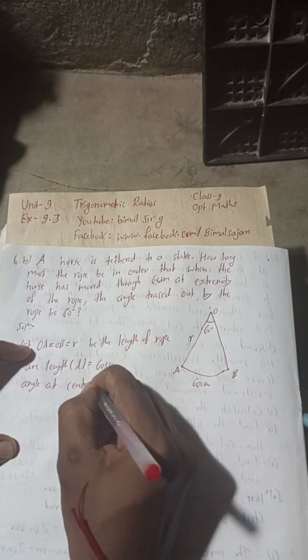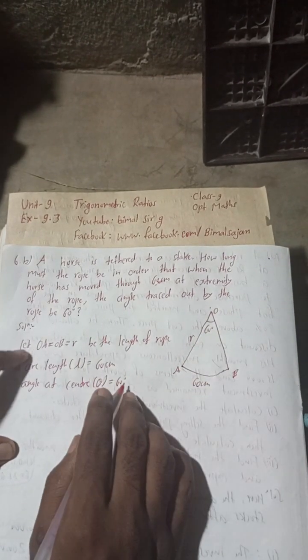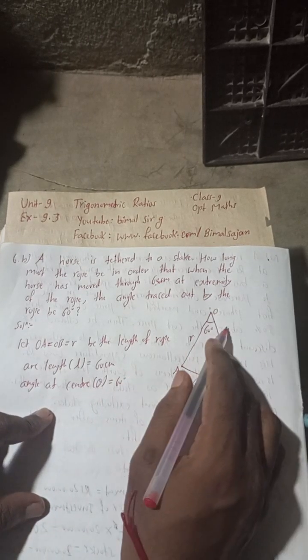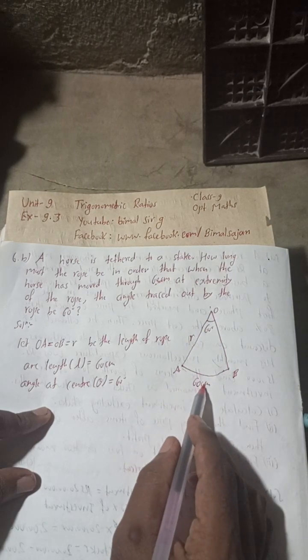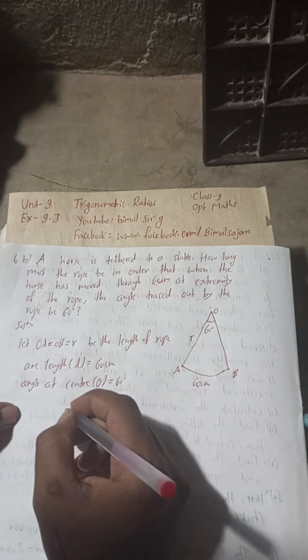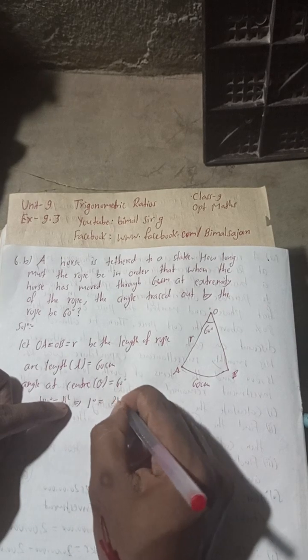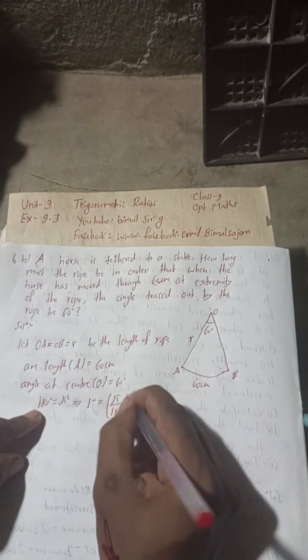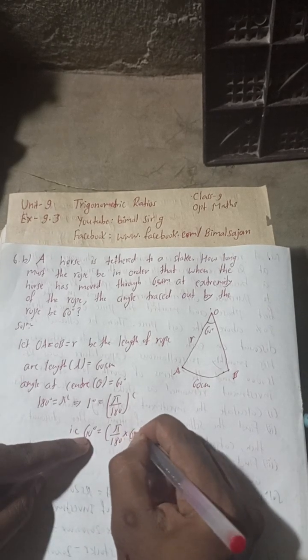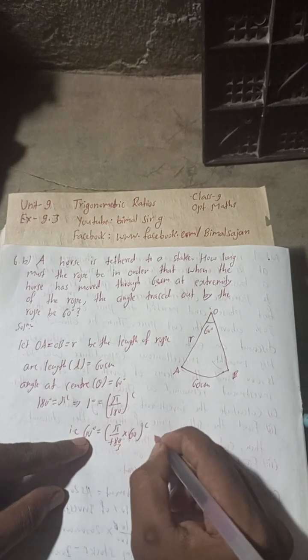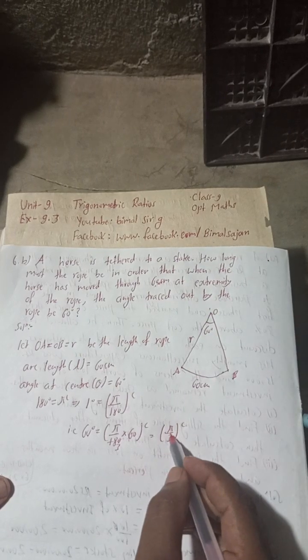In this type of question, the theta in degrees must be converted to radian. We know 180 degrees equals pi radian. This implies 1 degree equals pi by 180 radian, so 60 degrees equals pi by 180 times 60 radian, which is pi by 3 radian.